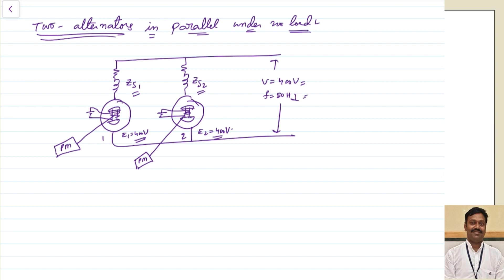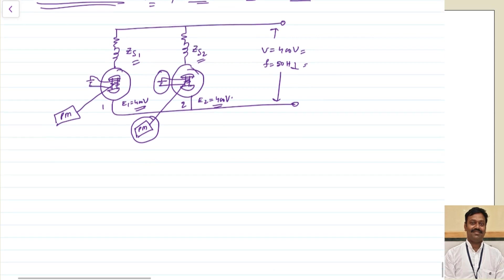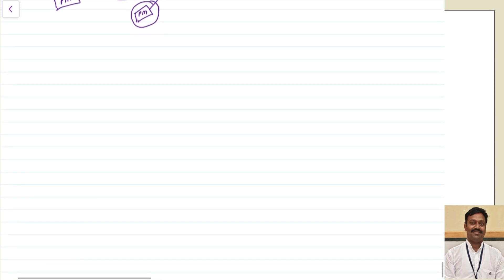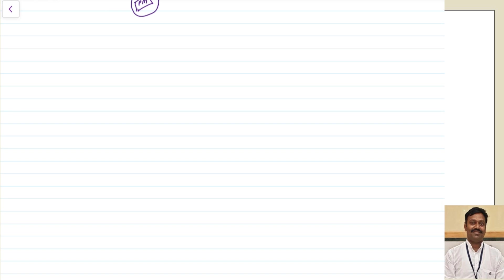What will be the effect of change in excitation? There are two parameters that can change: one is excitation and the second is change in the prime mover input. What is the effect under no load conditions? I want to demonstrate what synchronizing power is and how synchronization occurs, because in the last class I said I would discuss synchronizing power during parallel operation. So let us take the first case: what is the effect of change in excitation?